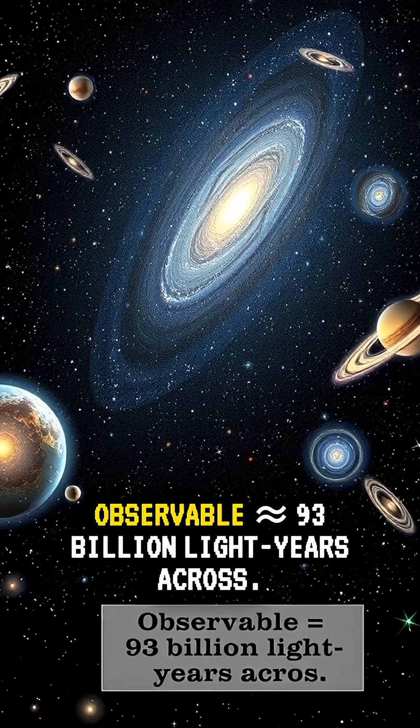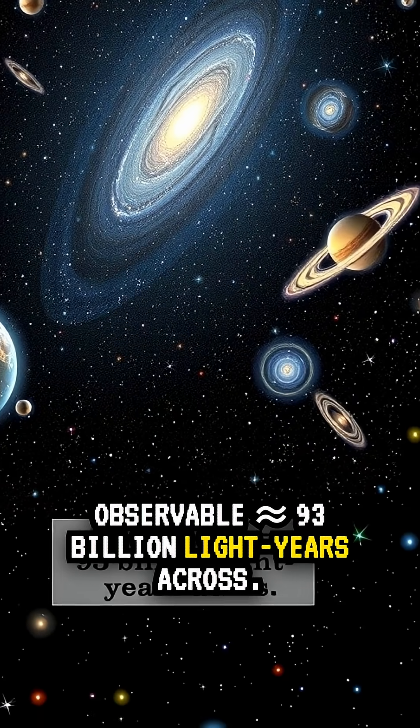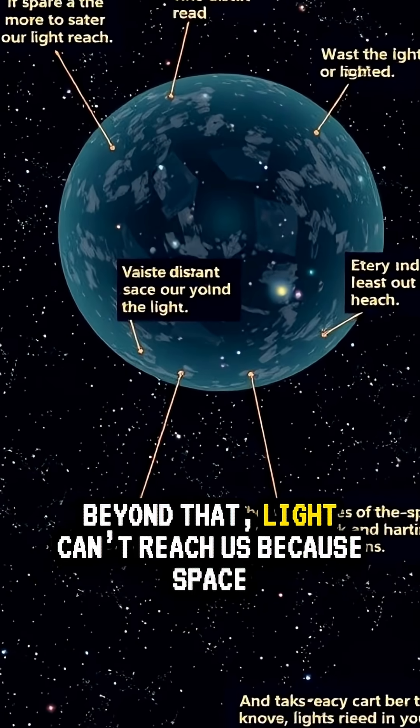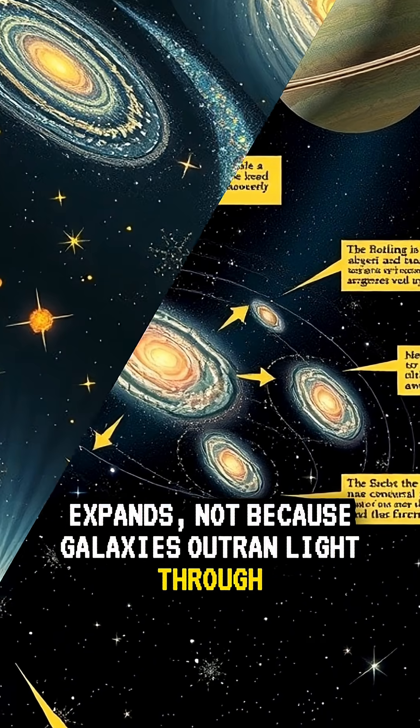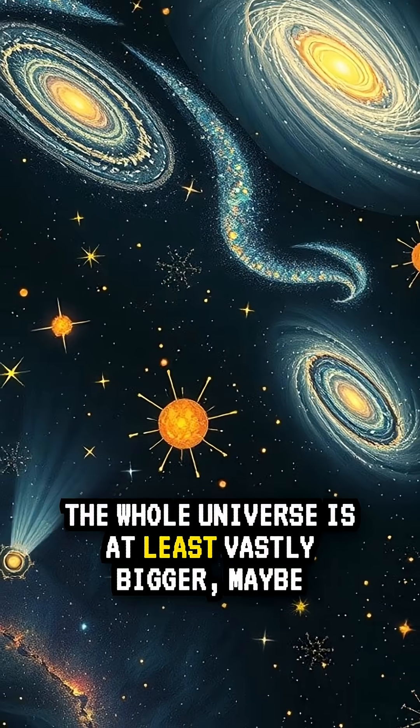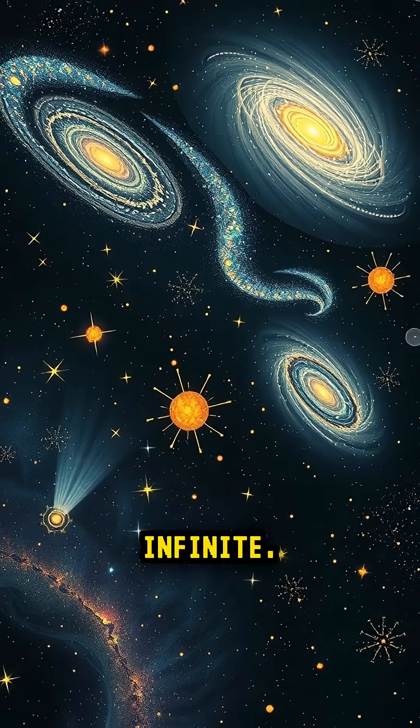Recap. Observable 93 billion light years across. Beyond that, light can't reach us because space expands. Not because galaxies outran light through space. The whole universe is at least vastly bigger, maybe infinite.